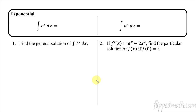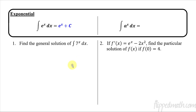Let's do some examples. Exponential — we're going to start off easy. Whatever the answer is, its derivative would give us e to the x. That's how you do antiderivatives: if you take its derivative, does it give you what you started with? This one's straightforward because the derivative of e to the x is e to the x, so the answer is e to the x plus c. That's our general form.